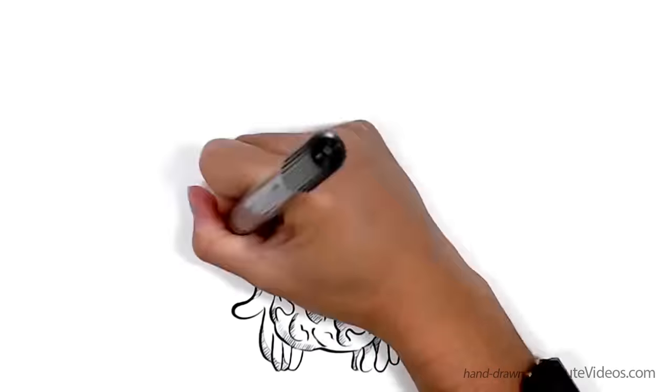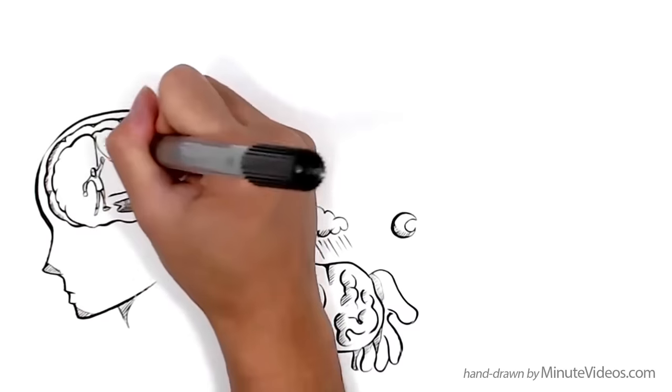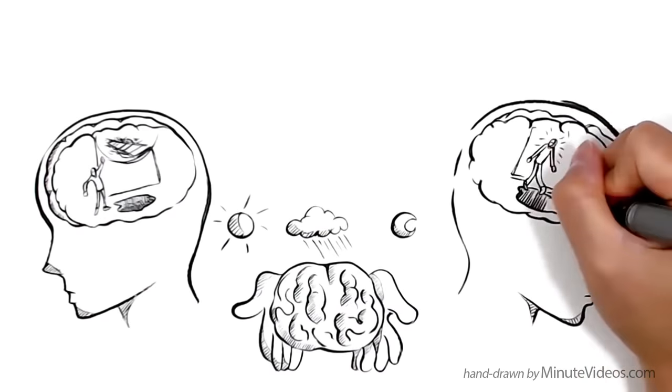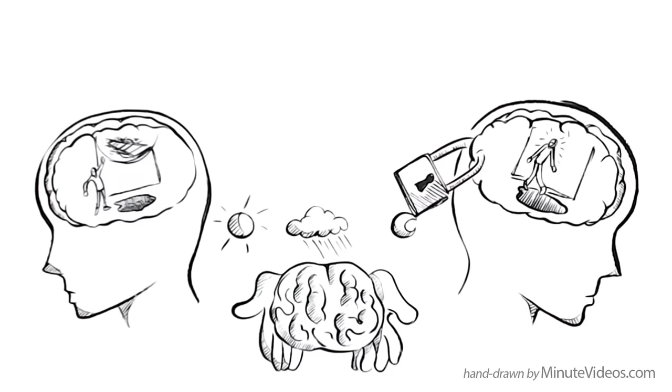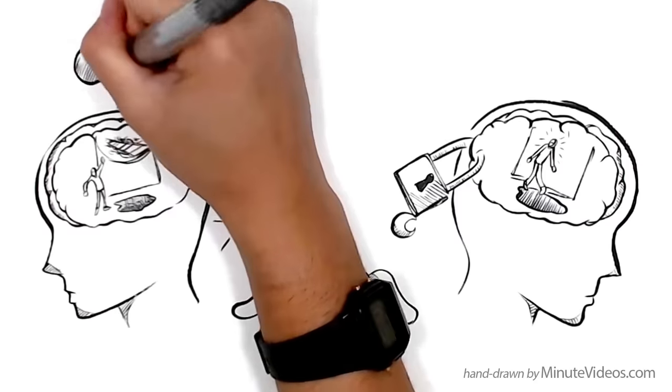There are two types of mindset we can cultivate, one that embraces problems as opportunities to learn, and one that avoids them, often out of fear to fail. People that avoid conflicts can be described as having a fixed mindset. Those who see problems as interesting challenges have a growth mindset.